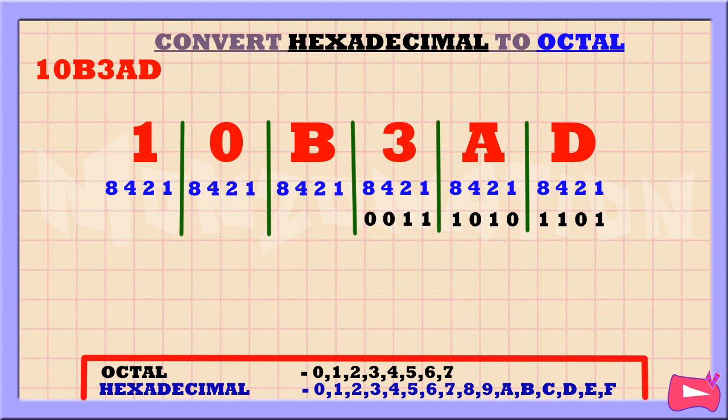3 is the sum of 2 and 1, so we're going to replace 2 and 1 with 1. We didn't use 8 and 4, so let's replace them with a 0.